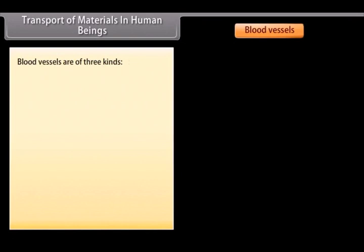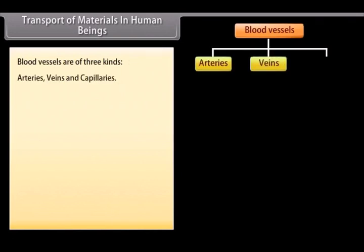Blood vessels are of three kinds: arteries, veins and capillaries.